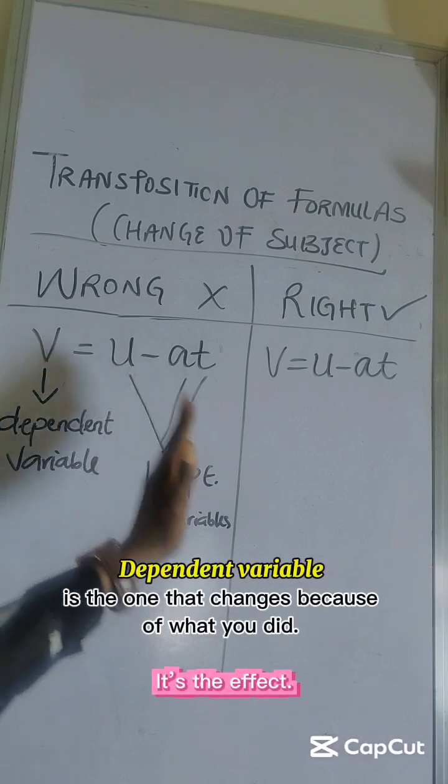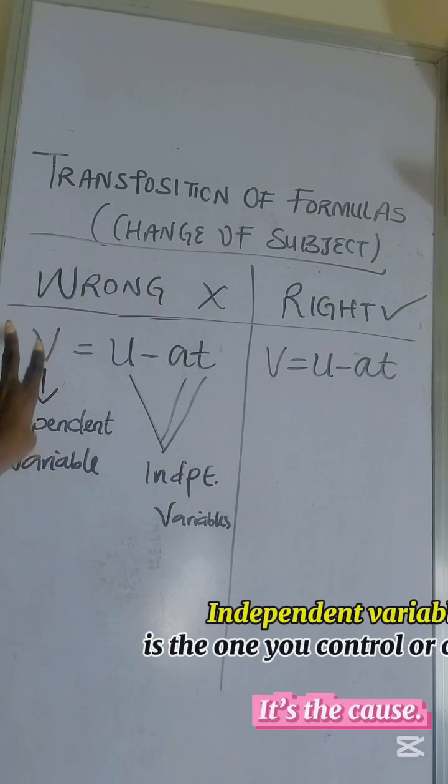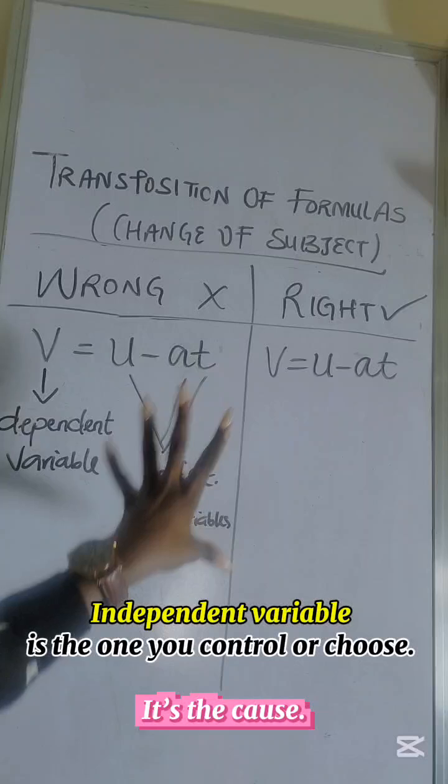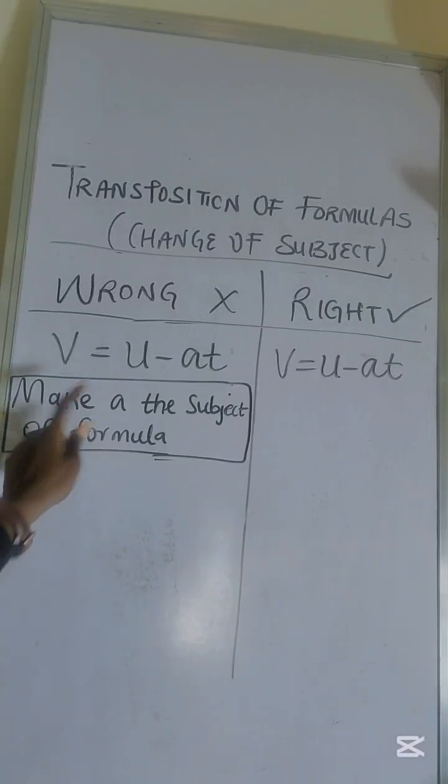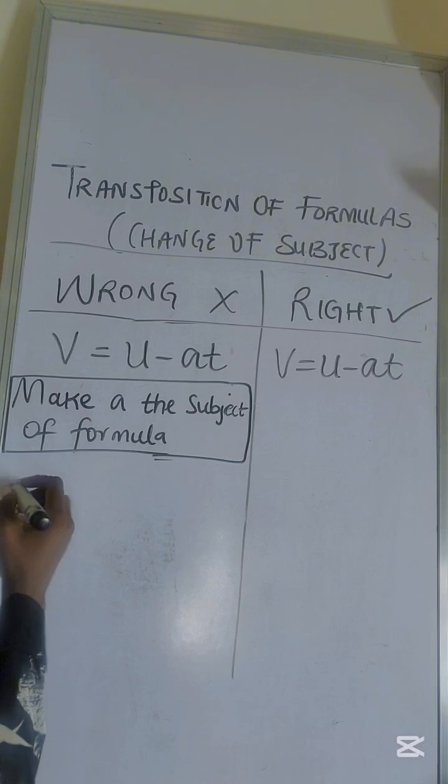You have the dependent variables and you have the independent variables. This depends on the values of this for it to change. So how do we make a the subject of formula here? Some people would say v...